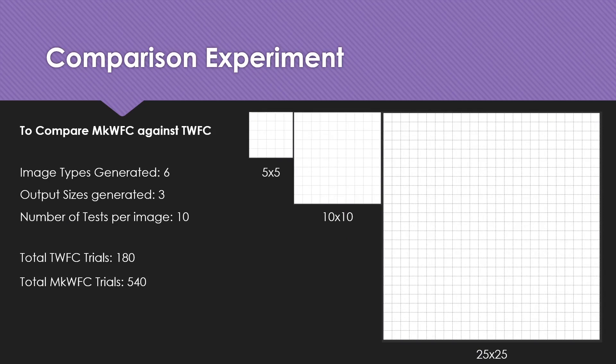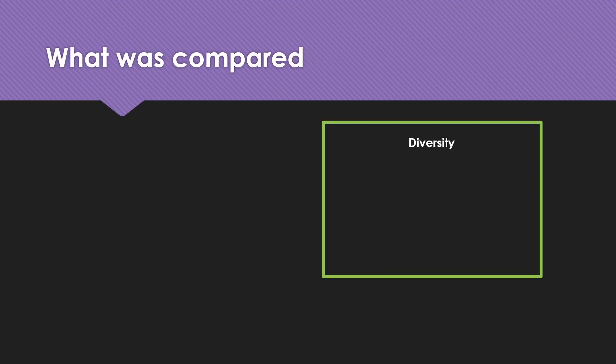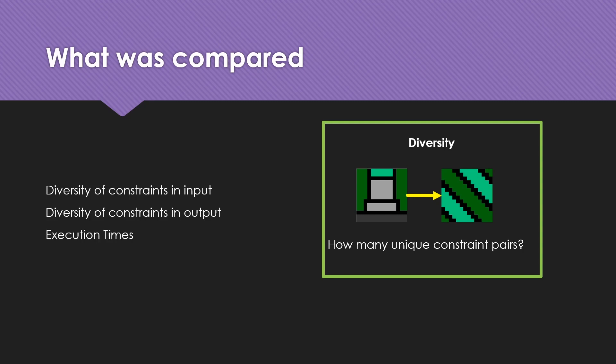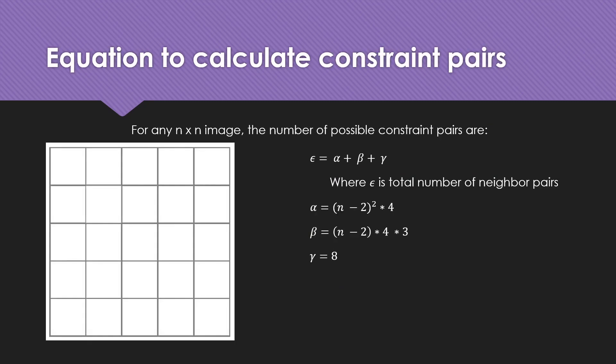Our comparison experiment used six different image types and generated three different image sizes. It performed 10 tests per image, resulting in a total of 180 TWFC trials and 540 MKWFC trials. We compared diversity, defined as the number of unique constraint pairs used either in the input or in the output. We also measured the execution times of both algorithms and required an equation to calculate constraint pairs for any tile map.